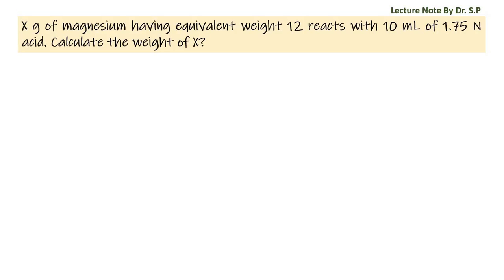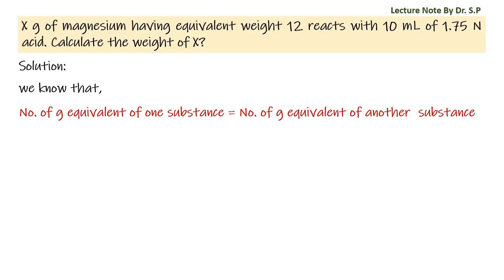We have a question: X grams of magnesium having equivalent weight 12 reacts with 10 mL of 1.75 N acid. Calculate the weight of X. Solution: We know that number of grams equivalent of one substance is equal to number of grams equivalent of another substance.